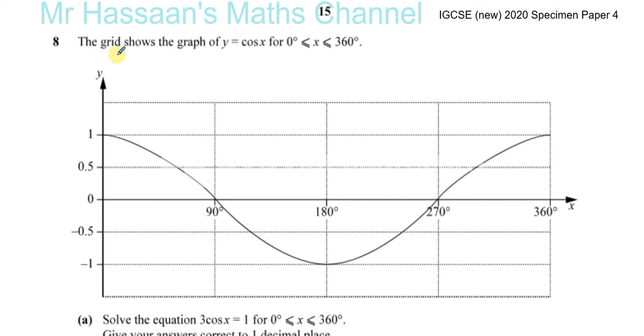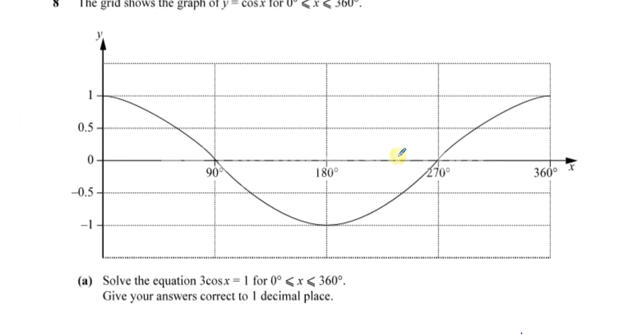This question is about trigonometry. The grid shows a graph of y equals cosine x for x values between 0 and 360 degrees. The graph is already drawn for us between 0 and 360, and this is something we should know. We should know how the graph looks between these values.